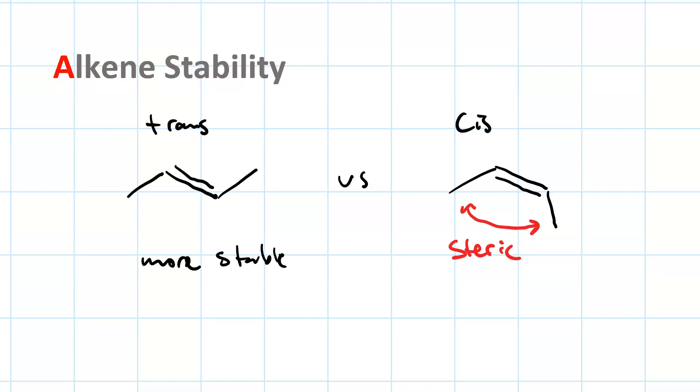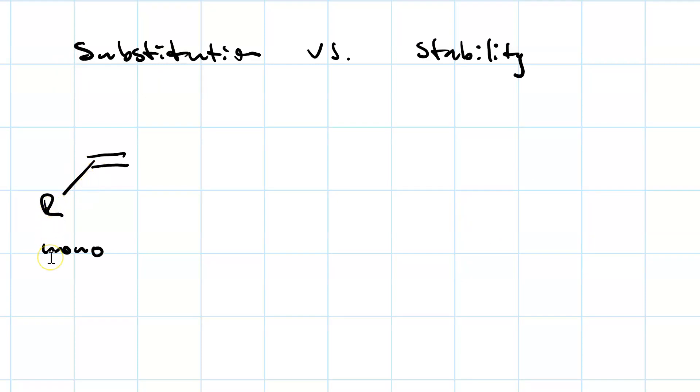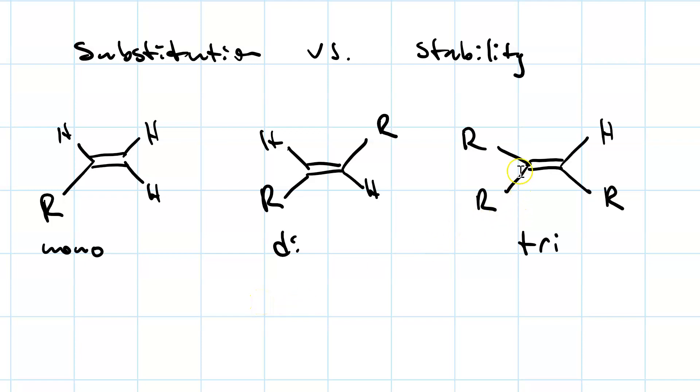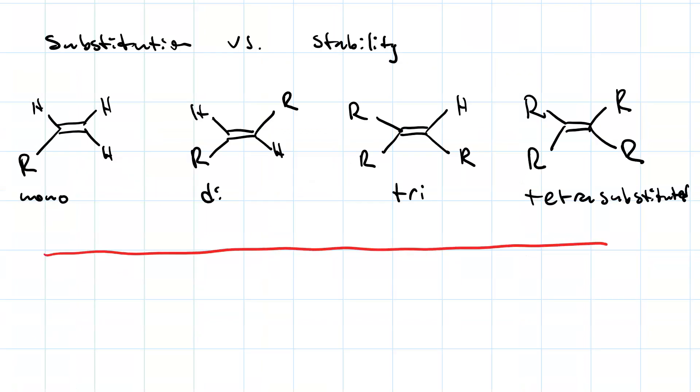Alkenes are also more stable the more substituted they are. A monosubstituted alkene is the least stable. Bear in mind that there will be three hydrogens on here as well. But it's the other carbons because the mechanism is the same as carbocation stability and hyperconjugation. Having two R groups, a disubstituted alkene is more stable than a monosubstituted alkene. Having three R groups, a trisubstituted alkene is more stable than a disubstituted alkene. Can you guess what the most stable alkene is? A tetrasubstituted alkene is the most stable.